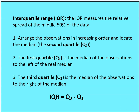The first thing we want to do is arrange the observations in increasing order and then locate the median — that's going to be our second quartile, meaning half of the data values are lower and half are higher. Then the first quartile is the median of the observations to the left of the real median, and the third quartile is the median of the observations to the right of the real median. The IQR is the difference in values between Q3 and Q1.